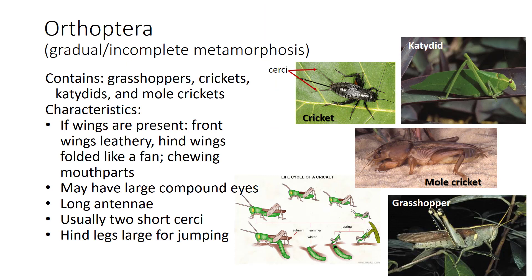I'll start with those that have gradual or incomplete metamorphosis, where the nymphs look like the adults except they don't have fully developed wings, and the nymphs also eat the same things as the adults. The first order is Orthoptera, which means straight wings, referring to the long straight front wings of grasshoppers. This order also includes crickets, katydids, and mole crickets.